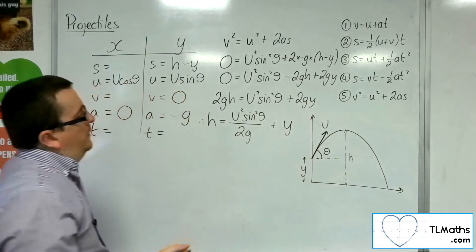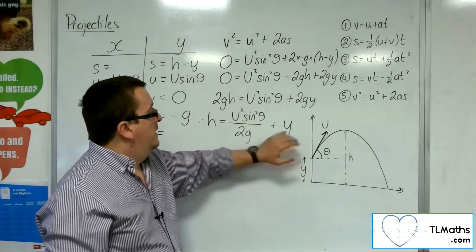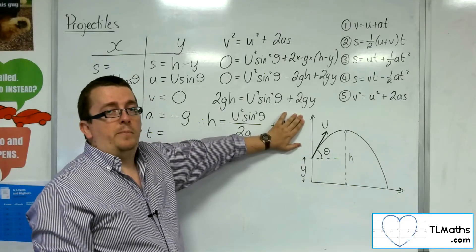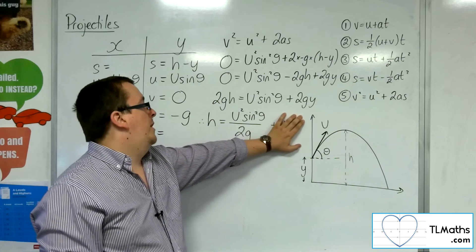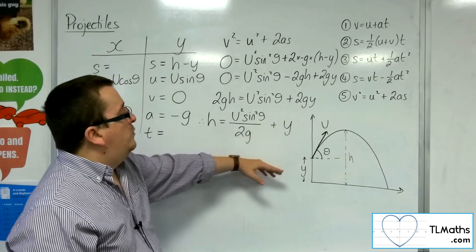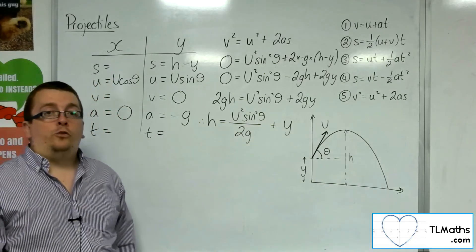OK, so in actual fact, if y was 0, then this would be the maximum height of the particle. So if you're starting at the origin, that's the particle's maximum height. If you're not starting at the origin and you're a little way up, then this is your formula, as we wanted to find.